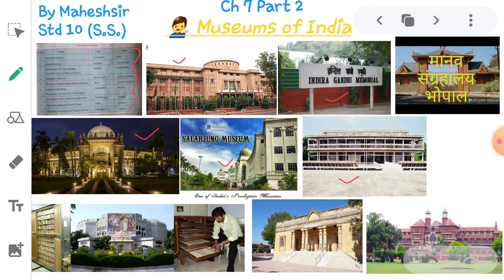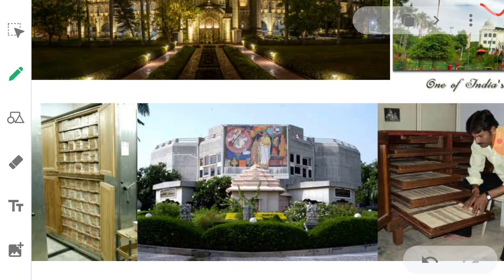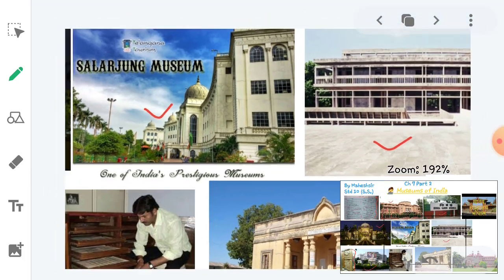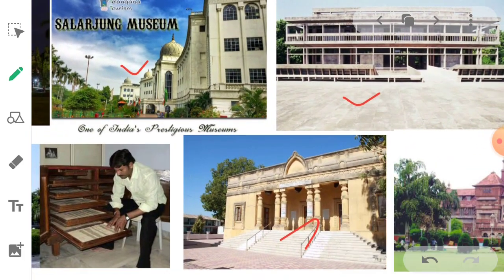Next is Lalbhai Dalpatbhai Museum, L.D. Institute of Indology, Ahmedabad, Gujarat. Then Shri Mahavir Jain Aradhana Kendra, Koba, Gandhinagar. Then Shri Hemchandracharya Library, Patan, Gujarat — you can see the map clearly. And last is the Vadodara Museum and Picture Gallery.